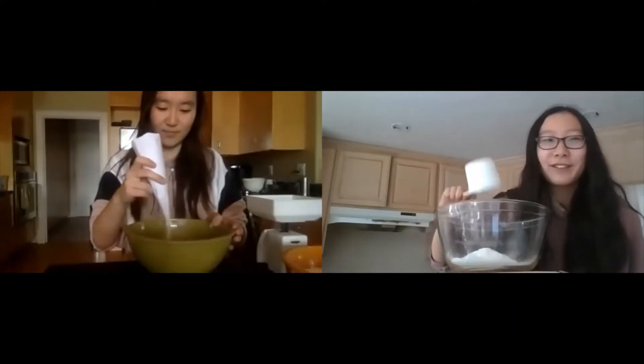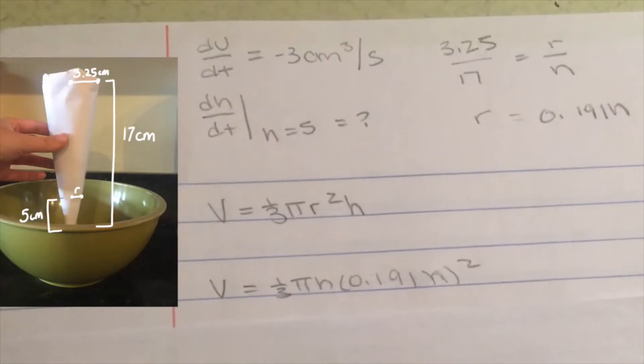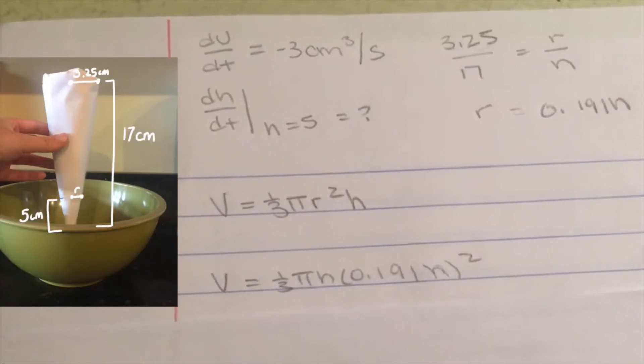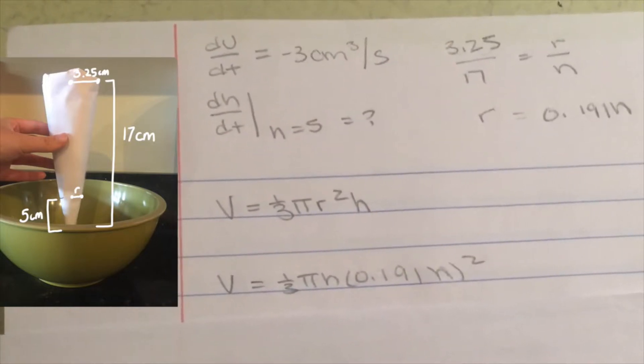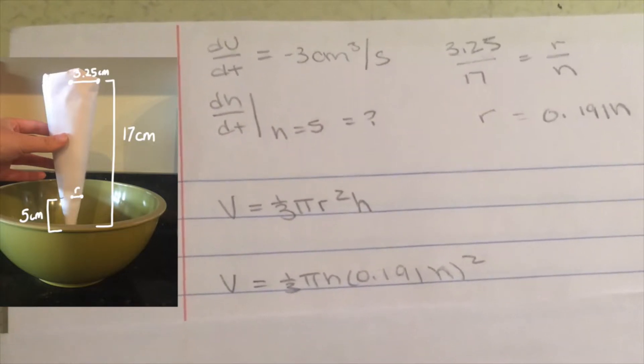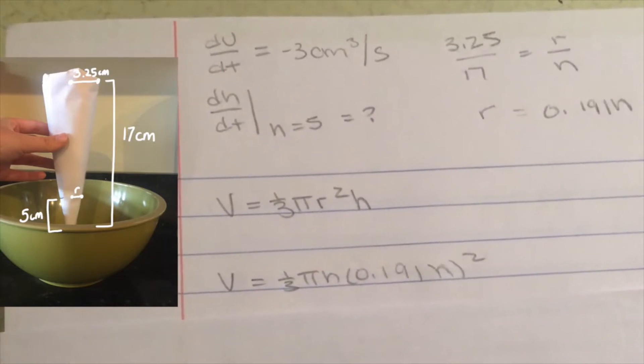Hey, Emma! I wonder what the rate at which the height of the sugar is changing in relation to how the volume is changing. Do you know what it is? That's a great question! We can actually figure this out using calculus. Sugar initially is 17 centimeters with a radius of 3.25 centimeters. And we know that the rate of volume is changing at 93 centimeters cubed per second. We are trying to find the rate at which the height of sugar is decreasing in the funnel when the height is 5 centimeters.